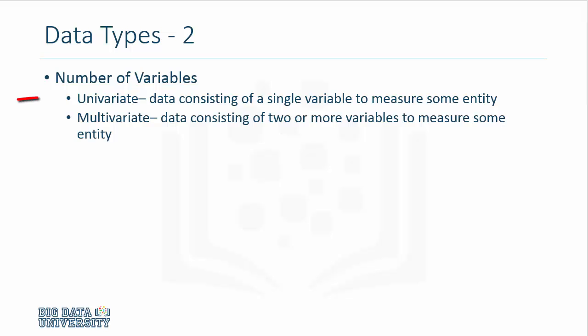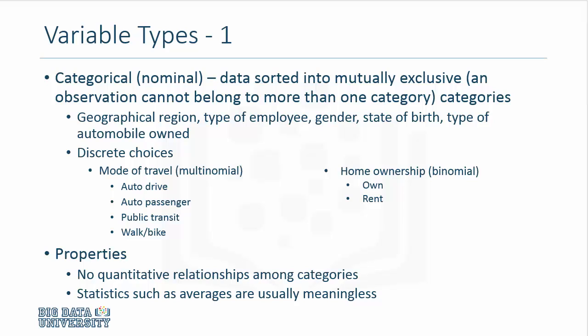If your data set has only one variable, it's called a univariate data set. If you have multiple variables, it's a multivariate data set. Let us now look at variable types and start with categorical or nominal variables. Consider home ownership, for instance. One can either own a home or rent a home. There are only two categories here: owning and renting. That is a categorical variable. The tenure status of an individual is essentially a categorical variable. In this particular case, because you only have two choices—own or rent—it's a binomial variable.